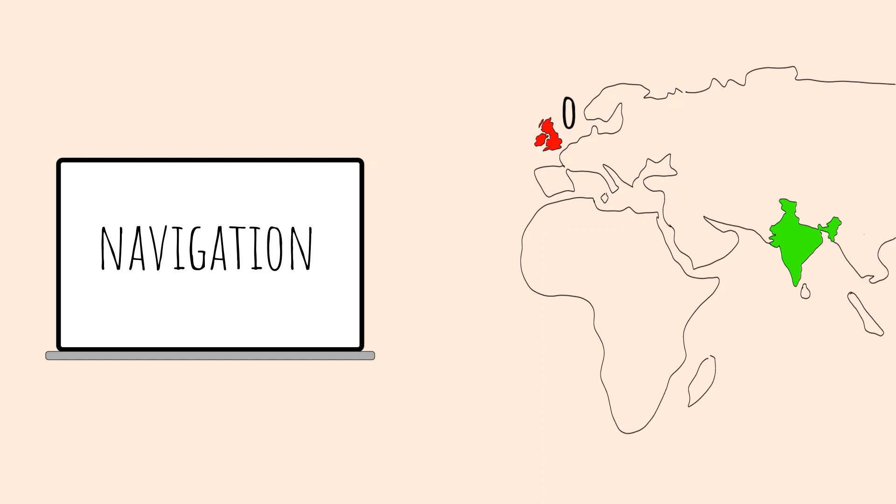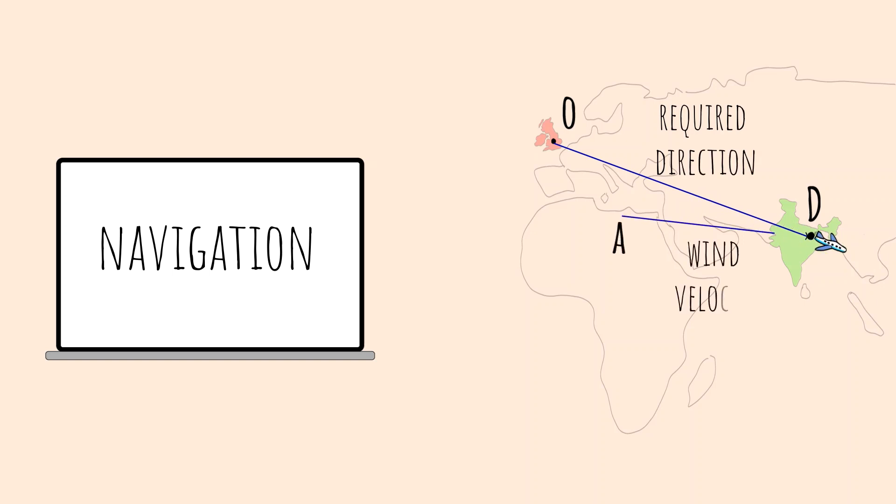Vectors are also used for navigation purposes. Consider the simplified direction of travel from origin to destination, vector OD. If the direction of the wind is in the direction AD, then utilizing the rules of vector addition, the pilot chooses the direction OA for the journey.